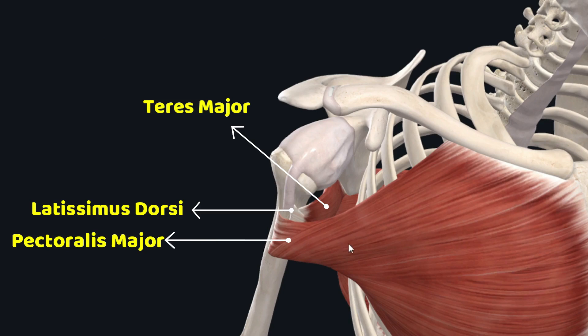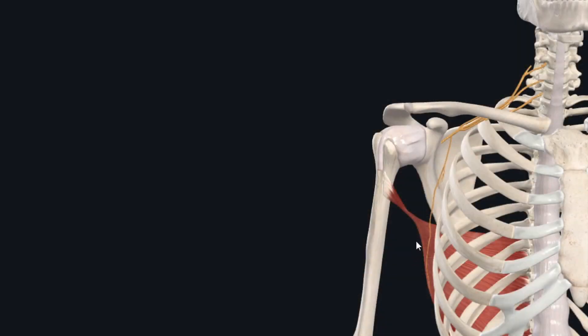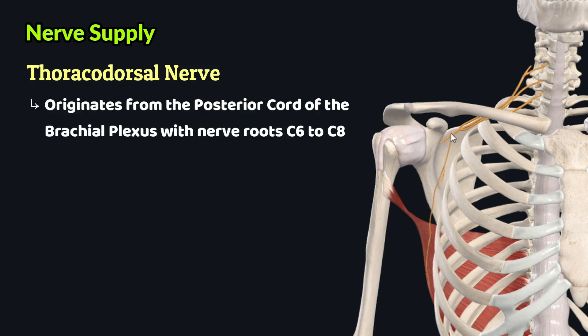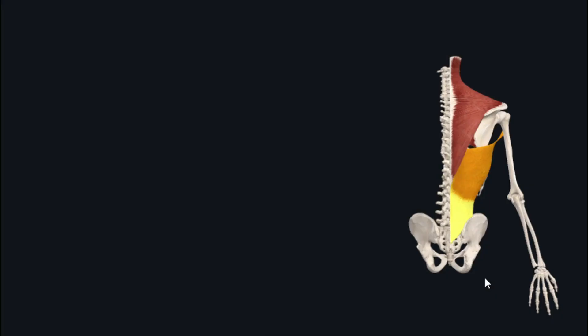The latissimus dorsi muscle is supplied by the thoracodorsal nerve, which originates from the posterior cord of the brachial plexus with nerve roots C6, C7, and C8.